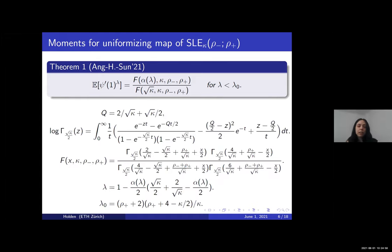In our formula, there is a function f, a function alpha, and a parameter lambda-zero. To define these objects, we first set Q equal to 2 over sqrt(kappa) plus sqrt(kappa) over 2. We then define the double gamma function by the shown integral when the real parts of kappa and z are positive, and by analytic continuation when the real part of z is negative. The function f appearing in the theorem is defined as the ratio of these double gamma functions. The function alpha is defined implicitly in the fourth line, and the parameter lambda-zero is defined in the last line. If lambda is greater than or equal to lambda-zero, the considered expectation is infinite.